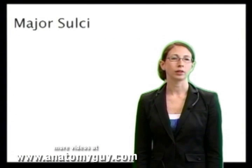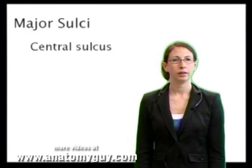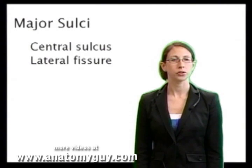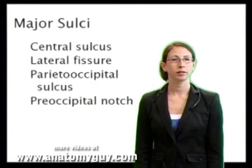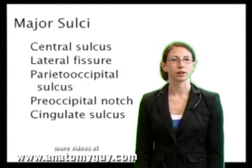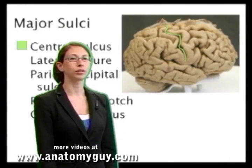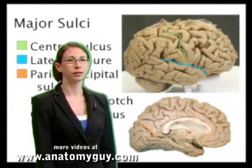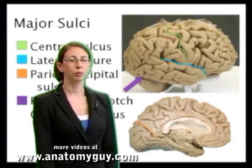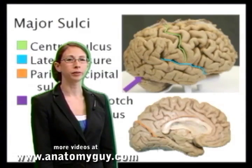We use major sulci to determine the delineations of the different lobes. The major sulci we will discuss today are the central sulcus, the lateral fissure, the parietal occipital sulcus, the preoccipital notch, and the cingulate sulcus. We can see here the central sulcus in green, the lateral fissure in blue, the parietal occipital sulcus in orange, the preoccipital notch noted by a purple arrow, and the cingulate sulcus in pink.